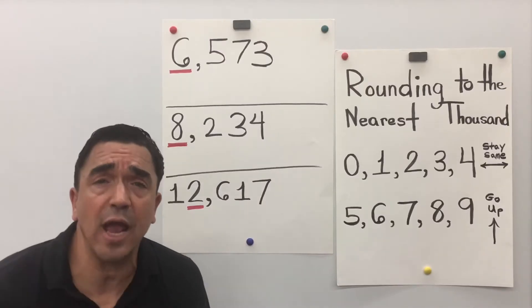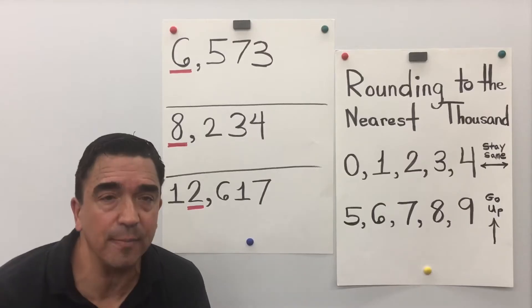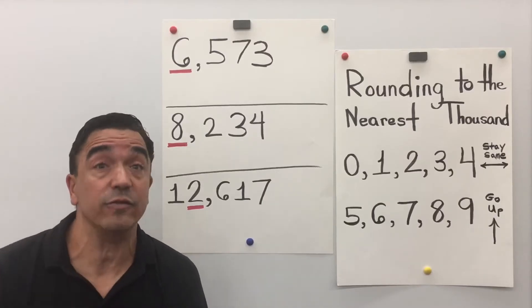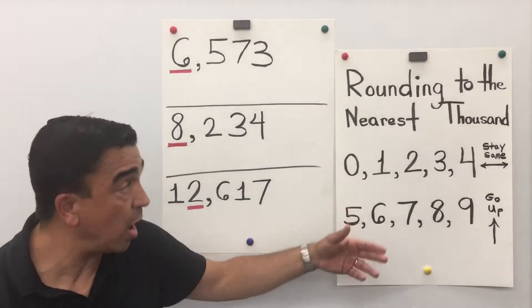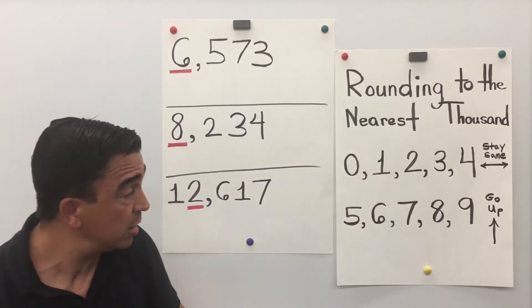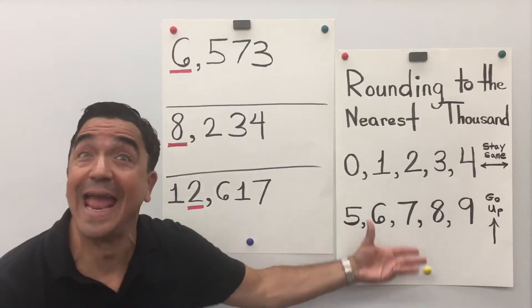Quick reminder, a digit is any symbol used to write whole numbers. For example, 0, 1, 2, 3, 4, 5, 6, 7, 8, 9.